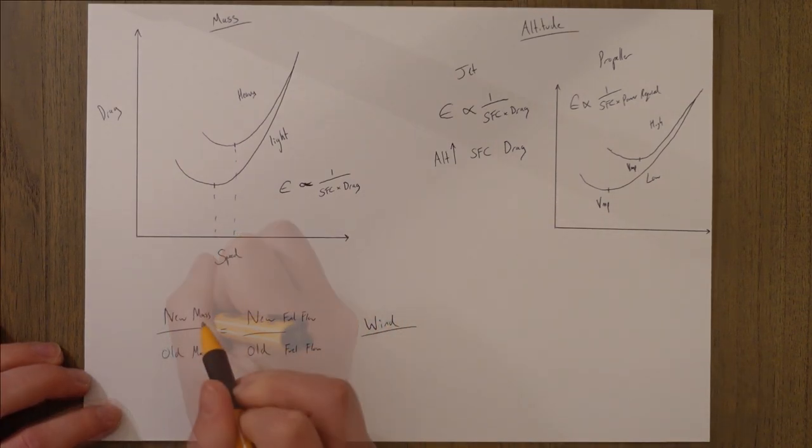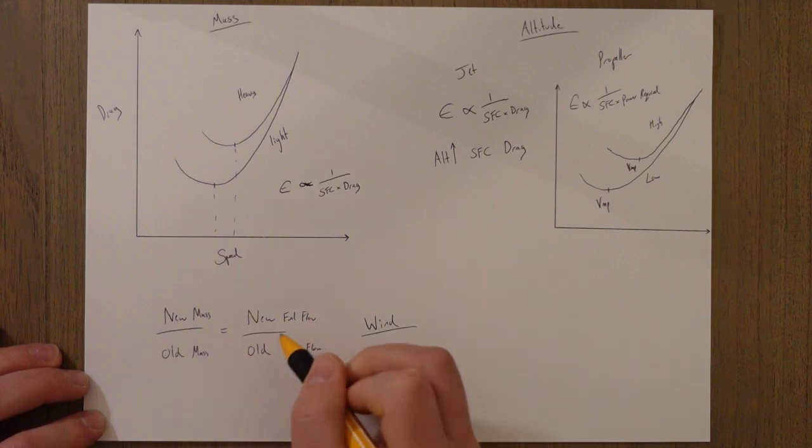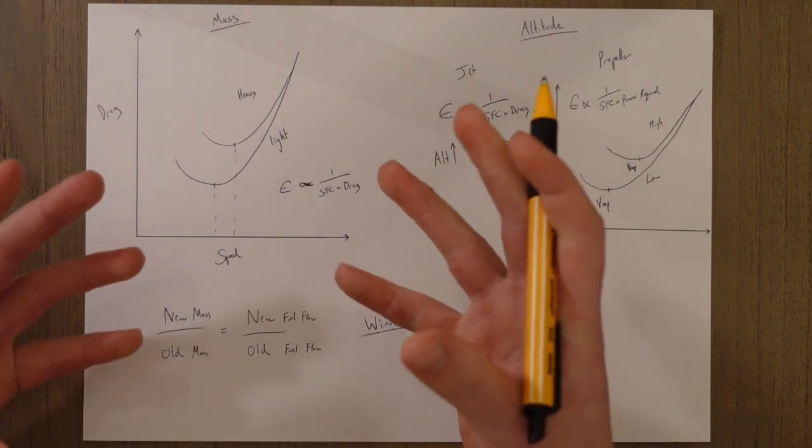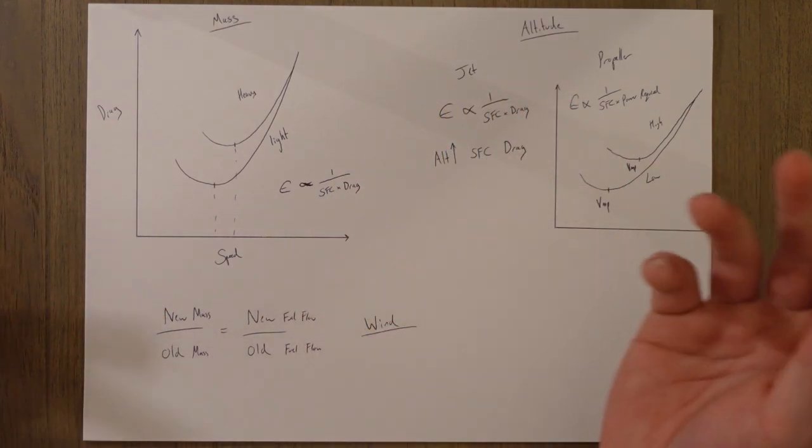So new mass over old mass equals new fuel flow over old fuel flow and it could be quite useful in exams to gauge an estimation and let's have a look at an example.